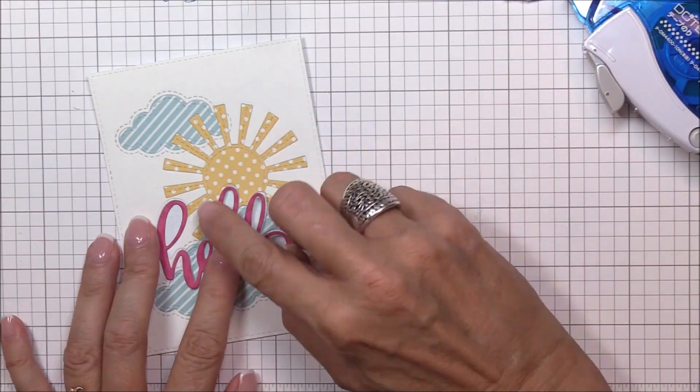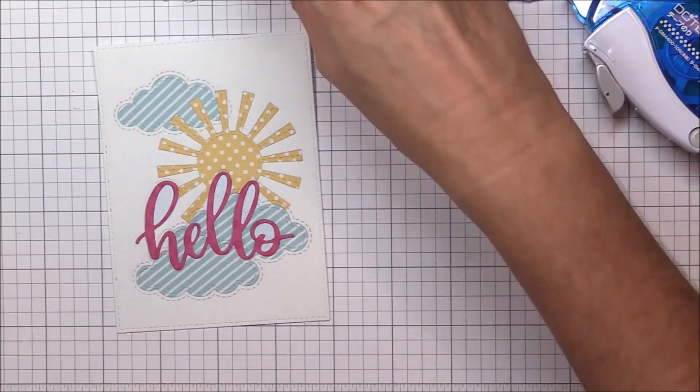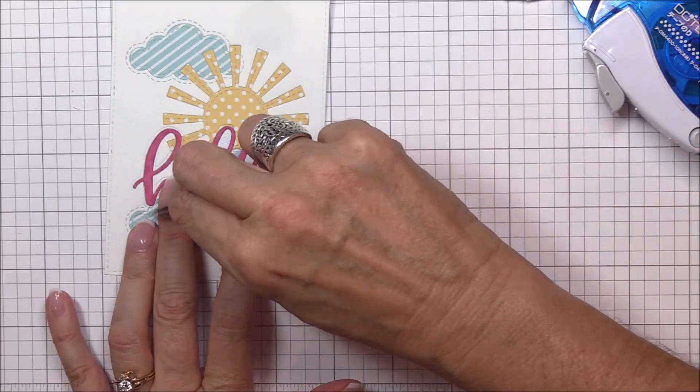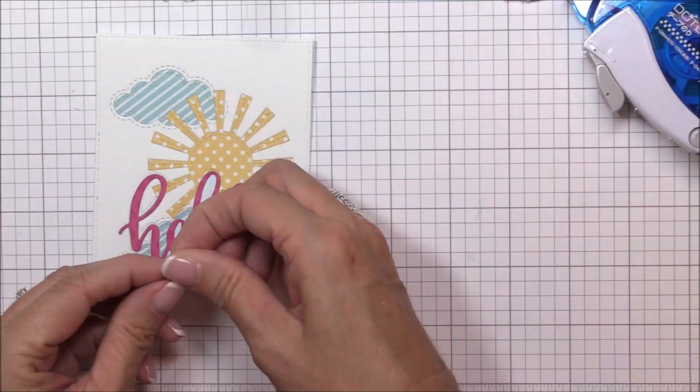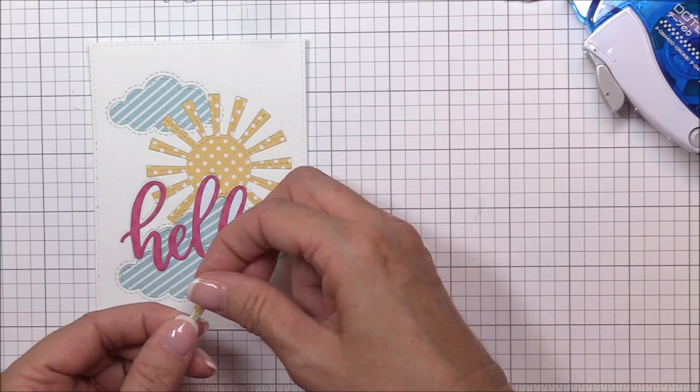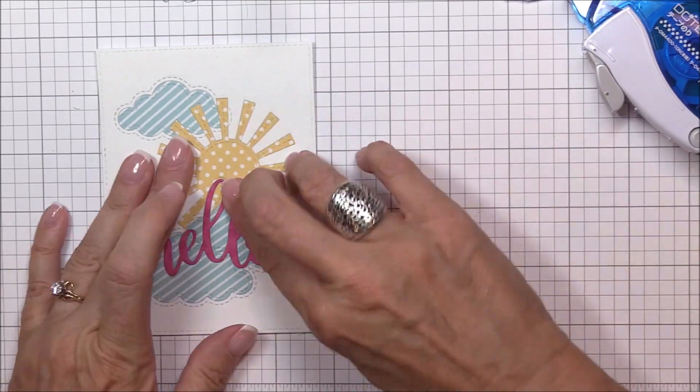Okay, I'm finally ready to put the hello word die cut in place. Because the word die cut has other parts that need to fit inside of it, I'm being really careful about the position of the die cut. The lightweight and flimsy nature of the pattern paper can sometimes cause it to lay down improperly, so I want to make sure I don't bend it or lay it in a way that those inside pieces won't fit properly.